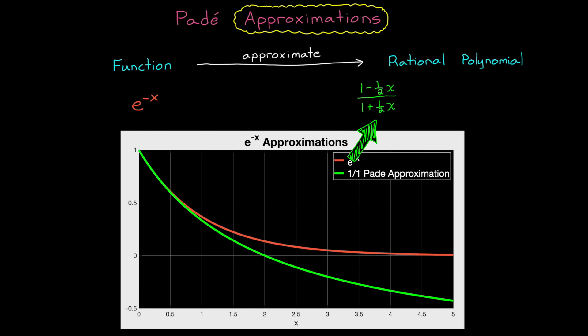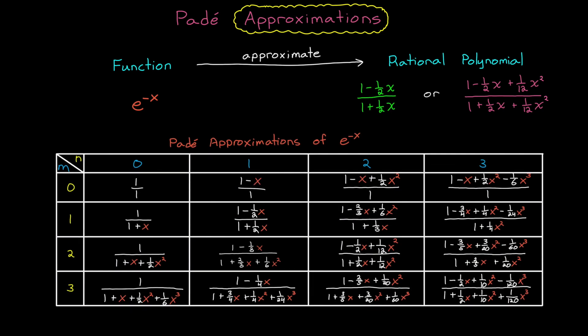Instead of a first order over first order, we could also choose higher orders like a 2 over 2 Padé approximation. And we can see that the higher order approximation does a slightly better job of matching the original function. These are just two examples. In general, we can choose a Padé approximation with any numerator order and any denominator order. This table shows the Padé approximations for e to the minus x up to order 3 for both the numerator and the denominator.